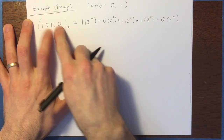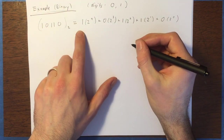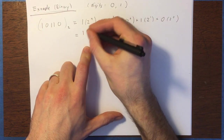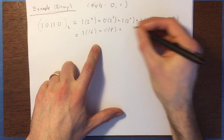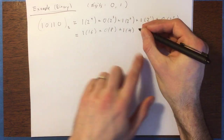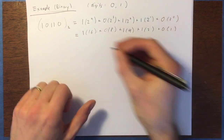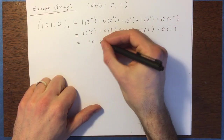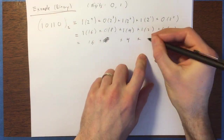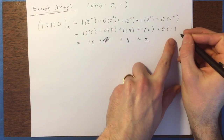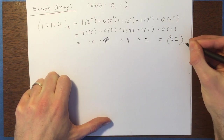So let's figure out what that is in base 10. That's going to be 1 times 16, plus 0 times 8, plus 1 times 4, plus 1 times 2, plus 0 times 1. So this all ends up being 16 plus 4 plus 2, and that's it — plus 0. So that equals 22. That's what it is in base 10.